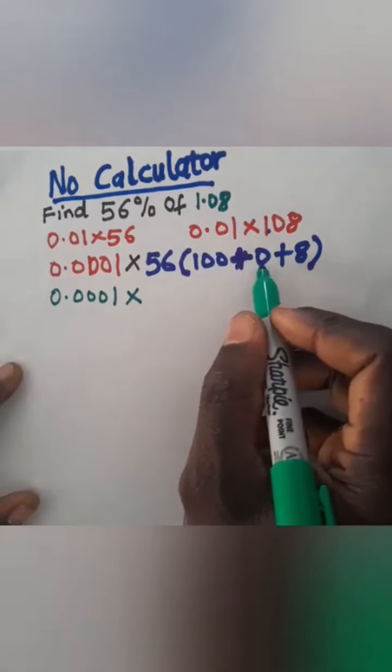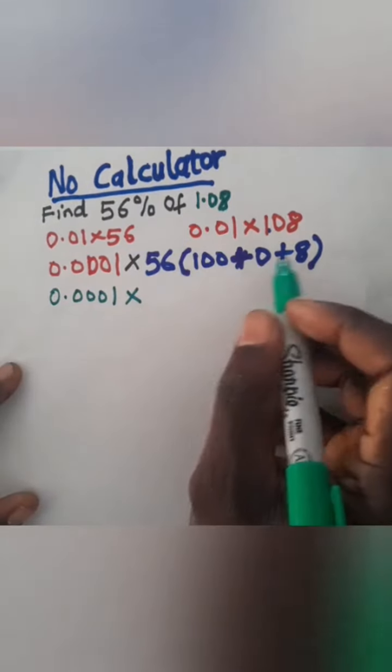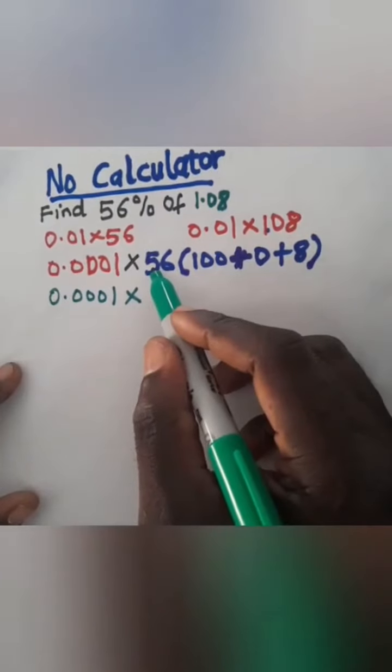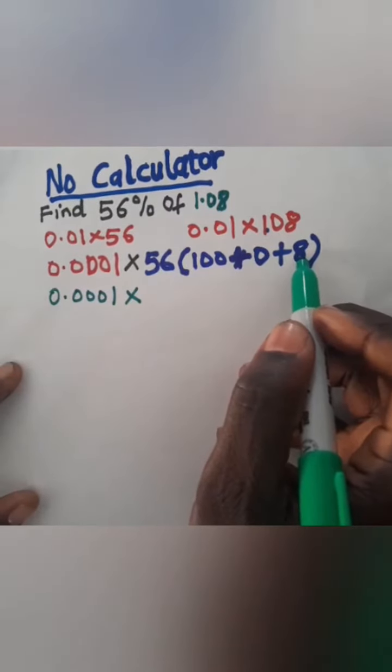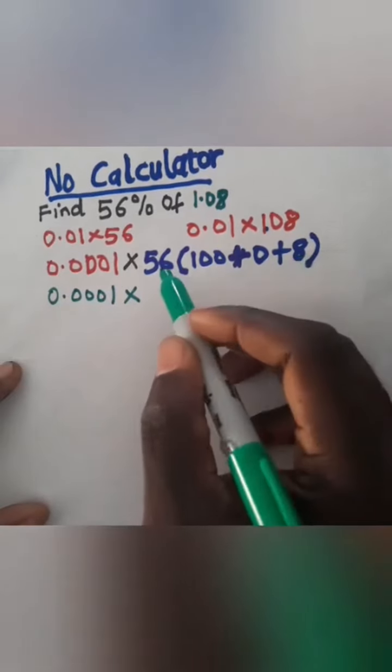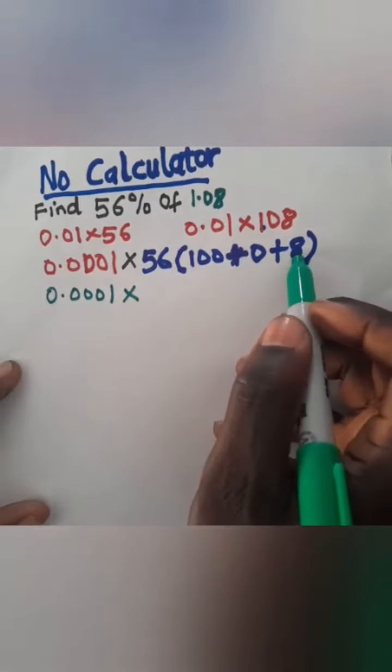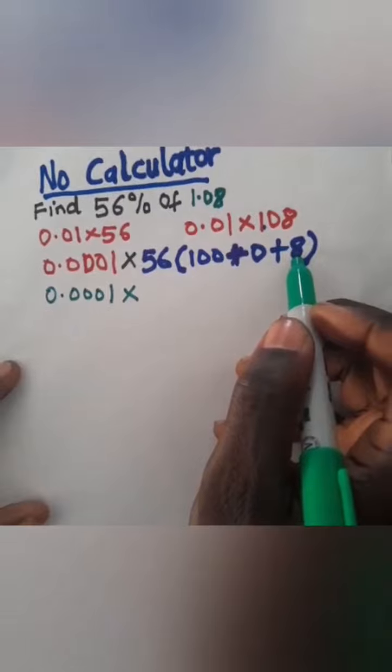Plus 56 times 0 is 0, then 56 times 8. I'll just have to multiply 50 by 8, so that's going to give me 400. Then I'll multiply 6 by 8, that will give me 48.